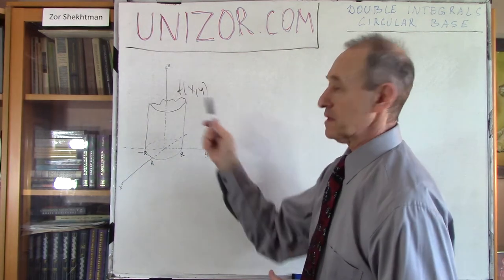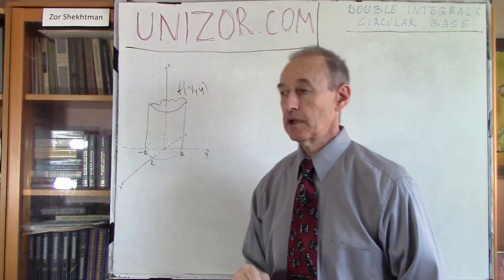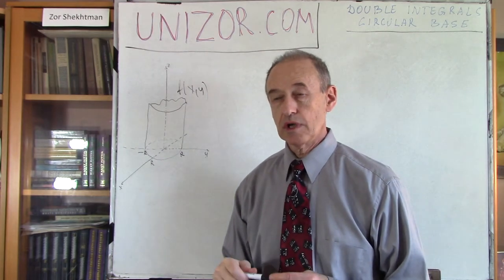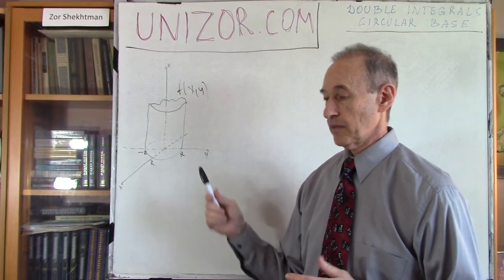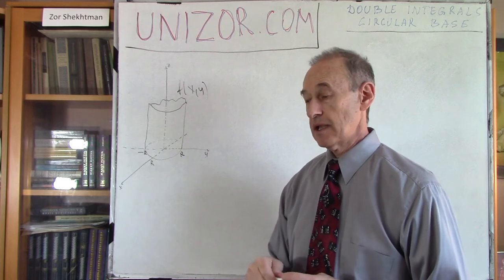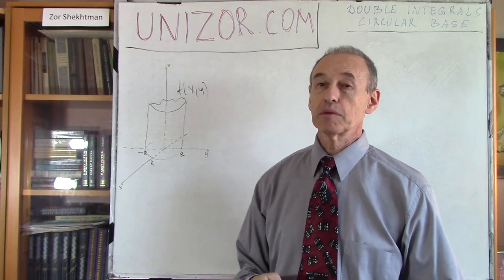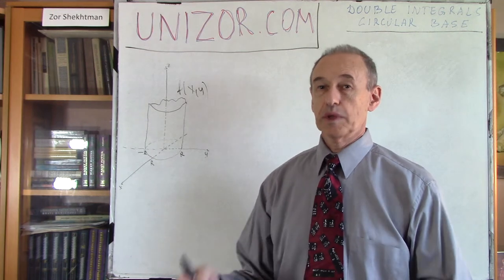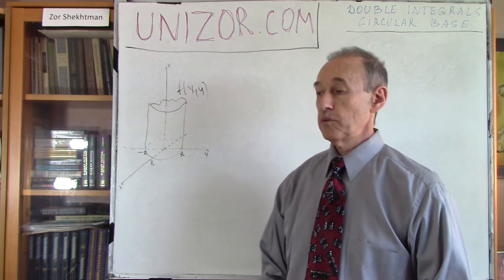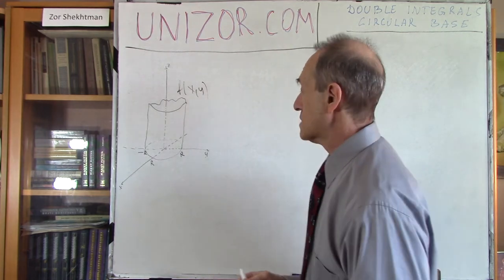I assume that the function is smooth enough, and I will use exactly the same approach as with double integrals on rectangular base — which is the same as when I was talking about single integrals and area under the curve — which means I will divide the base into small pieces.